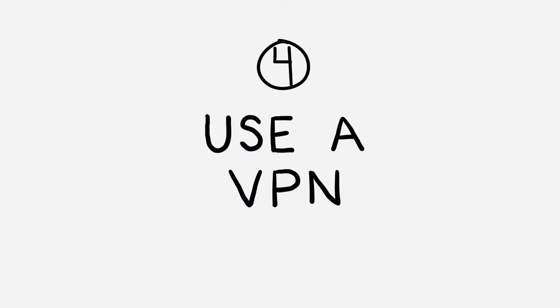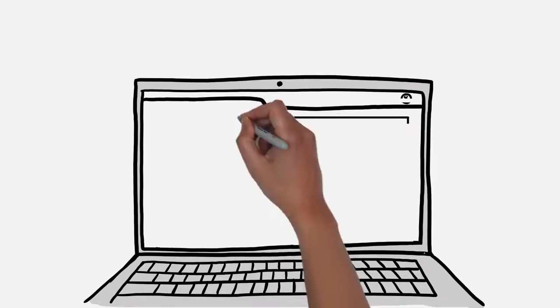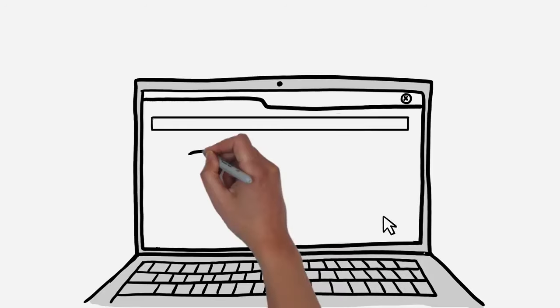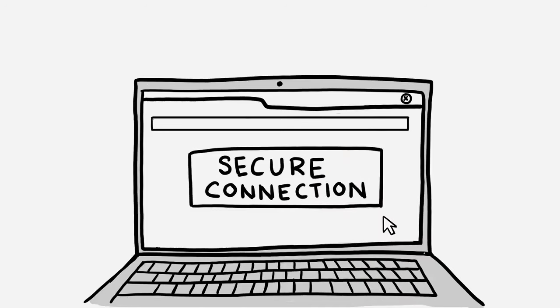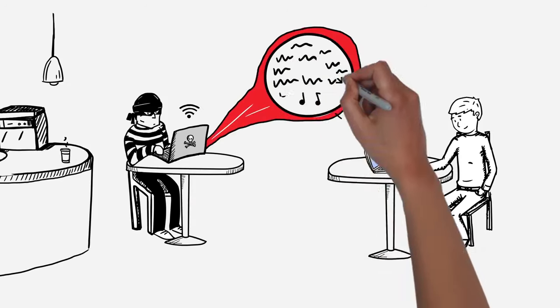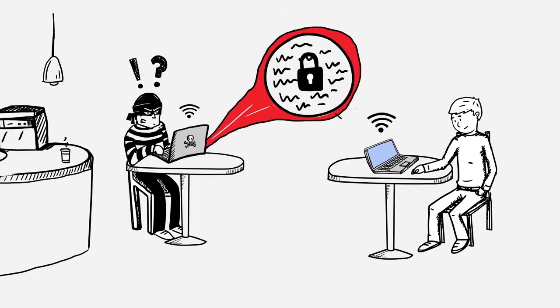4. Use a VPN. If you need to check sensitive data like your banking account while on public Wi-Fi, use a virtual private network or VPN. Even if a cybercriminal positions himself in the middle of your connection, your data will be strongly encrypted.